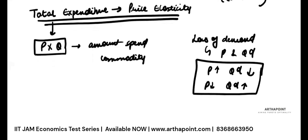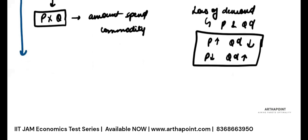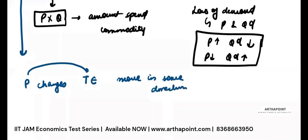Let's understand what the expenditure method says. When price changes, the expenditure will also change. But if price and expenditure move in the same direction, which means when price is increasing, expenditure is increasing, and when price is decreasing, expenditure is decreasing, then elasticity of demand is less than 1 in absolute terms.